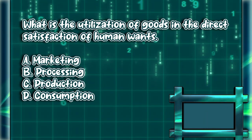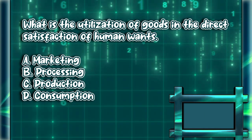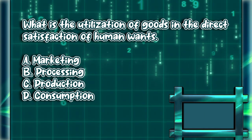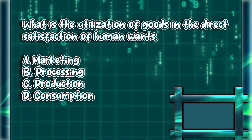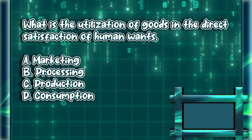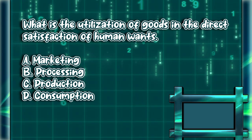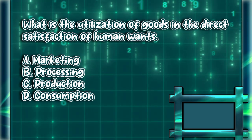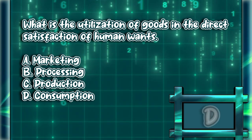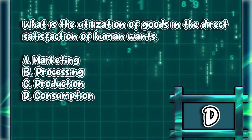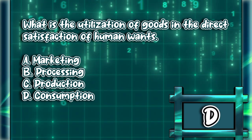What is the utilization of goods in the direct satisfaction of human wants? A. Marketing. B. Processing. C. Production. D. Consumption. The answer is letter D.